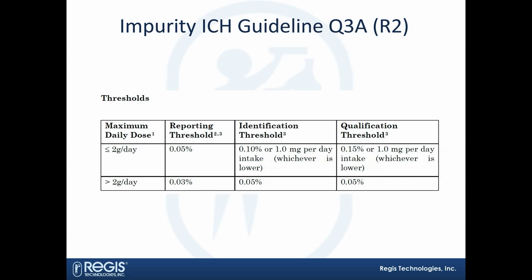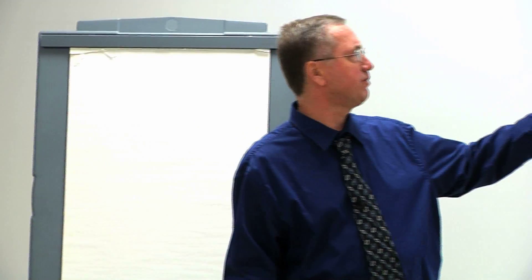So we helped define that for the customer. I'm sure that anybody involved in impurities knows about this guideline. Most of us tend to focus on the middle row, which is for dosing less than or equal to two grams a day. But there are reporting, ID, and qualification thresholds for impurities. This is always center stage when you're manufacturing and you create a new impurity, or maybe you have more of a certain impurity you've seen before — what is the level? The reporting threshold is at 0.05%, and qualification is the one that gets serious because it means tox studies, time, money.